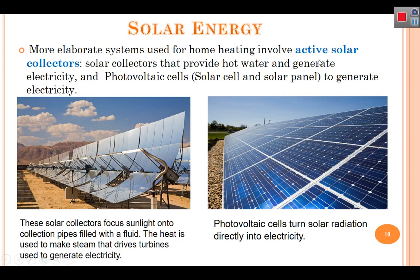Another type is the active solar collector. This system provides hot water and generates electricity using solar cells or solar panels. The solar collector focuses sunlight into a collector pipe filled with fluid; the heat is used to make steam and drive turbines to generate electricity. This is called photovoltaic cells, which turn solar radiation directly into electricity.